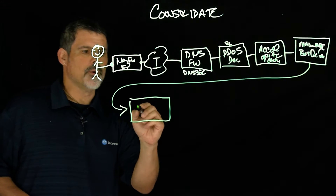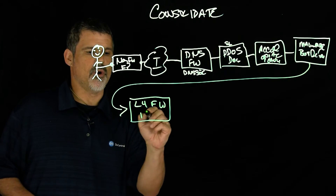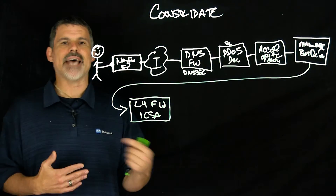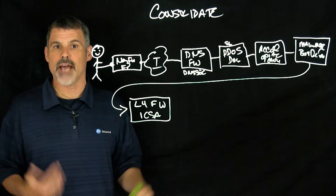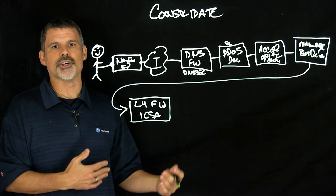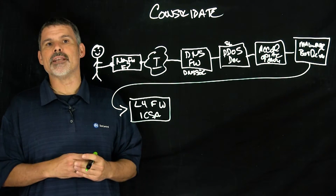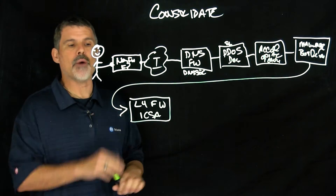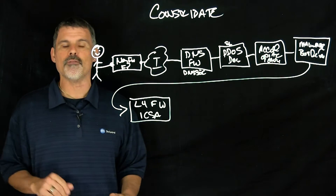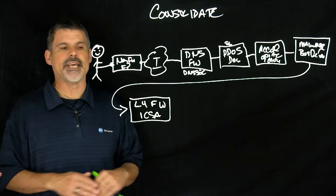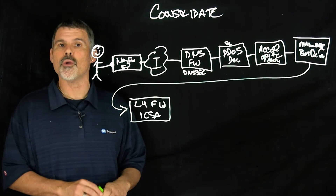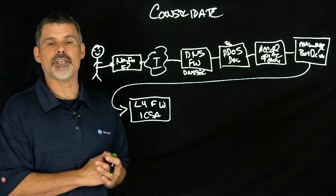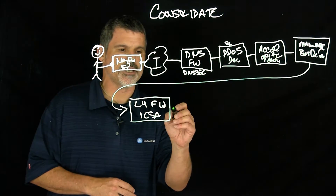Next would be a layer 4 firewall. BIG-IP is an ICSA certified network firewall, helping protect against all of those network layer type attacks coming into your data center. Application layer attacks are more common than network layer attacks, but having a layer 4 firewall within your DMZ can help eliminate the need for your own firewalls, terminating the DMZ and separating the DMZ from your internal infrastructure.